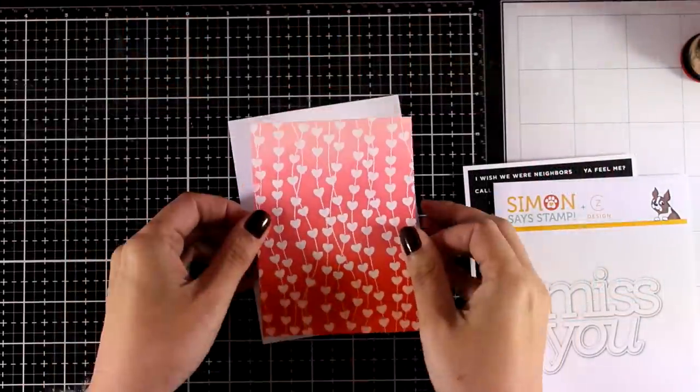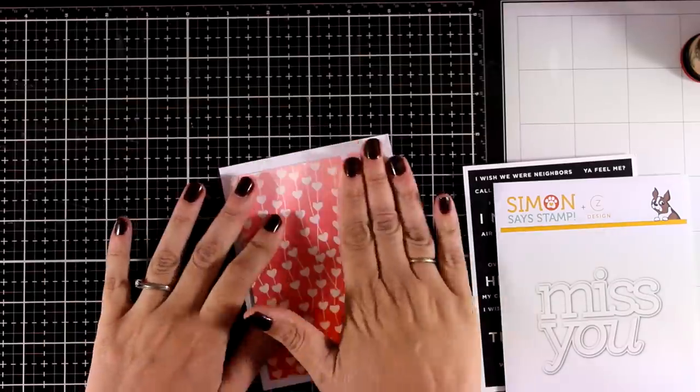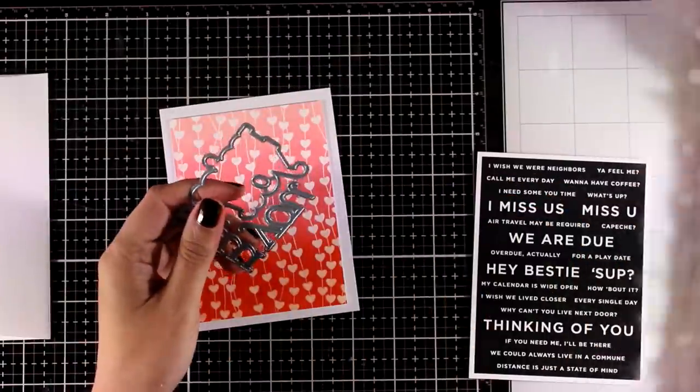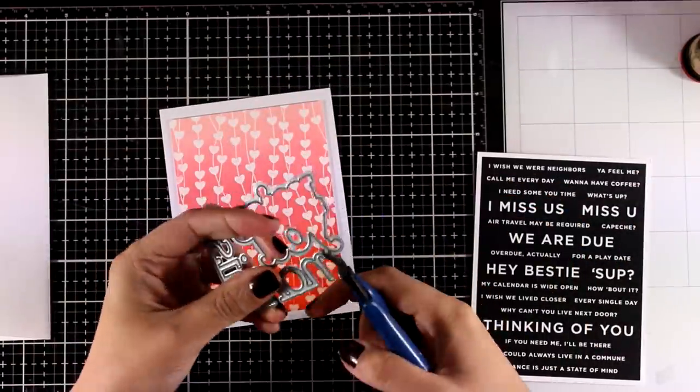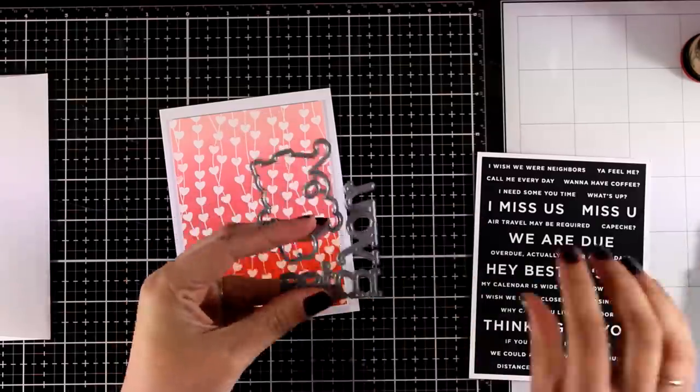I trimmed this panel to be slightly smaller than the standard card and I'm going to stick it on top by using some foam tape at the back and now as the sentiment I picked this new sentiment from the new collection that says Miss You and I like that it gives you the outline as well as the actual words.